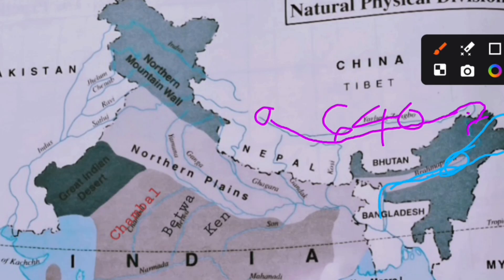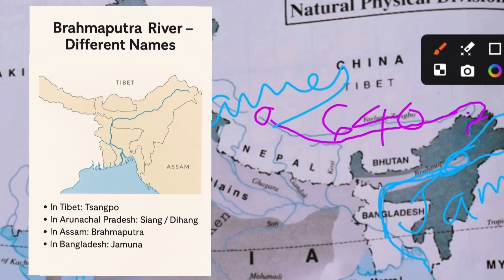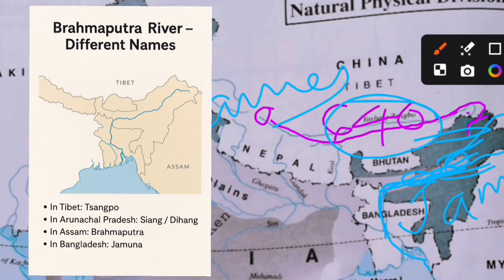After the rivers Lohith and Dibang join, the river is called Brahmaputra from that point. Then it enters Bangladesh, where it is called Jamuna, and finally flows into the Bay of Bengal. So the Brahmaputra has many names: Sangpo in Tibet, Siyang or Dihang in Arunachal Pradesh, Brahmaputra in Assam, and Jamuna in Bangladesh.